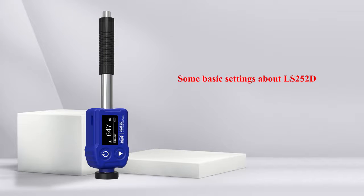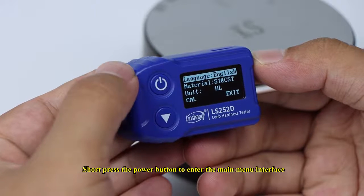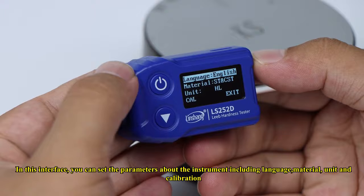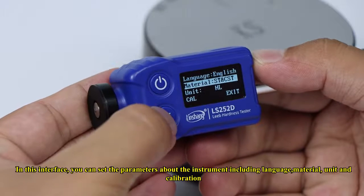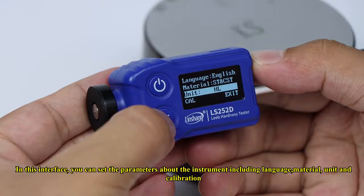Some basic settings about the LS252D: Short press the power button to enter the main menu interface. In this interface, you can set parameters about the instrument including language, material, unit, and calibration.